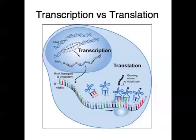Very briefly, in transcription, the instructions which are encoded on the DNA are transcribed into another molecule which is called RNA. And in translation, those instructions which are now on the RNA are translated into a protein built of amino acids. So DNA has instructions, those instructions are transcribed onto RNA, and then translated into a protein, which then does its job within the cell.